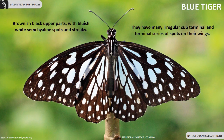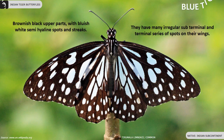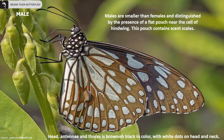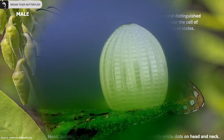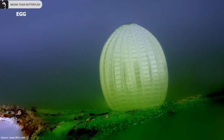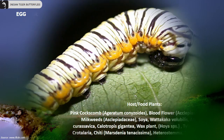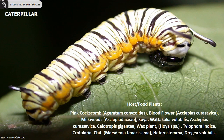Blue Tiger is a very common butterfly found in the Indian subcontinent. They have brownish black upper parts with bluish white semi-hyaline spots and streaks. They have many irregular sub-terminal and terminal series of spots on the wings. Males are smaller than females and distinguished by the presence of a flat pouch near the cell of the hind wing. The host plants of Blue Tiger butterfly include pink coxcomb, blood flower and milkweeds.